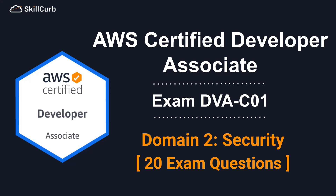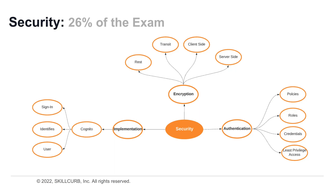Welcome to the AWS Certified Developer Associate Practice Exam video, where we will focus on the security domain. As you can see from the visual, there are three key categories: authentication, encryption, and implementation. Together, these categories make 26% of the exam questions.